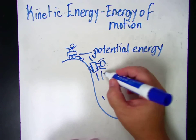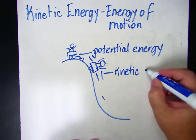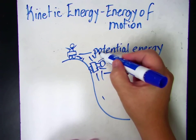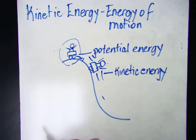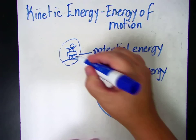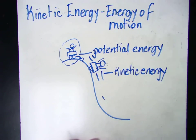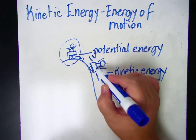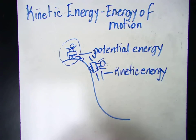This energy of movement is kinetic energy. The kinetic energy comes from the potential energy. All of the energy stored up in the roller coaster rider at the top of the hill gets transferred to the movement or motion of the roller coaster. So the more potential energy, the more kinetic energy.